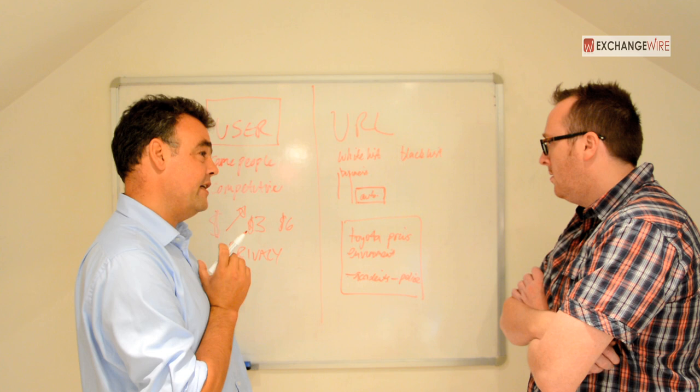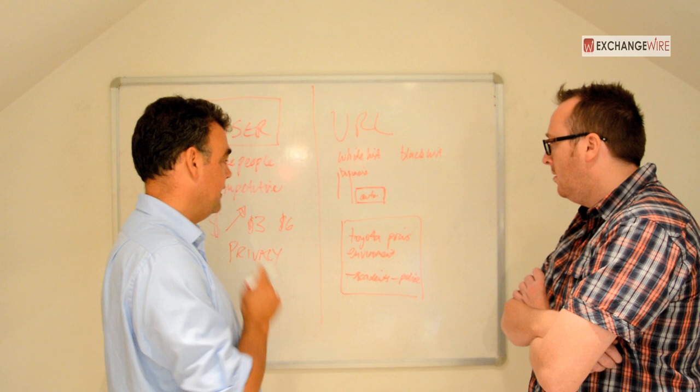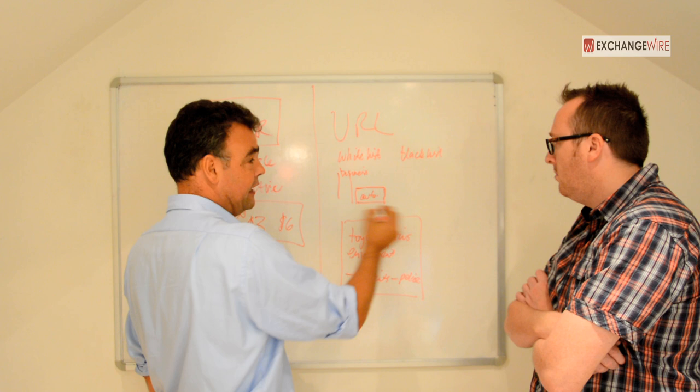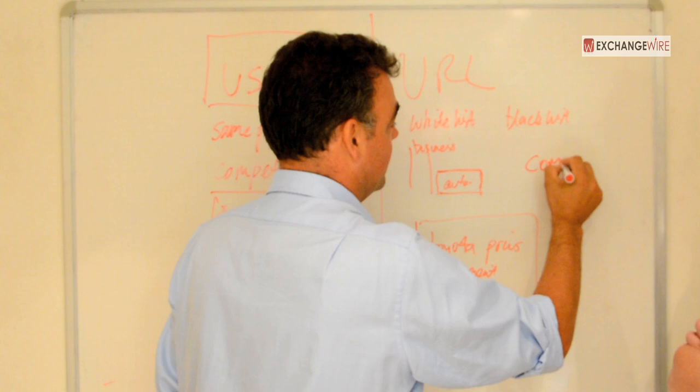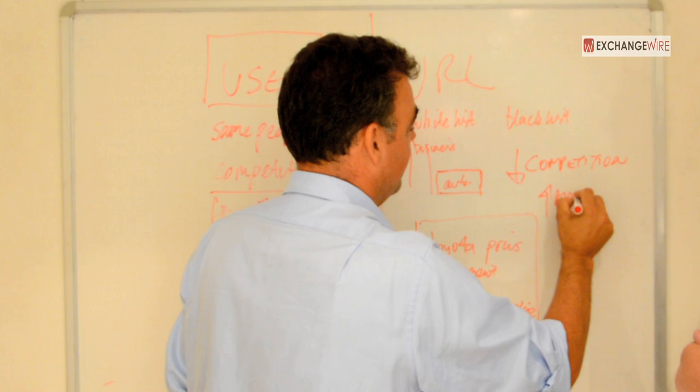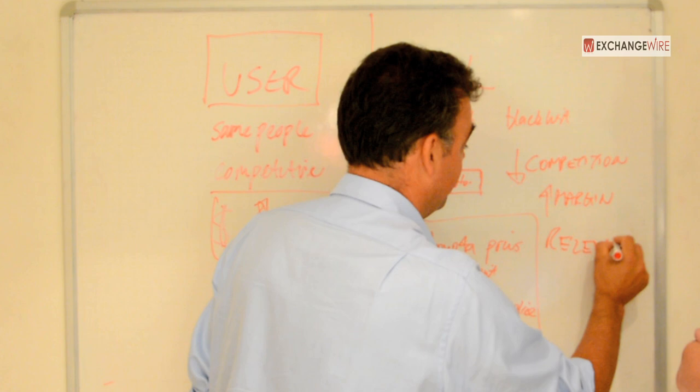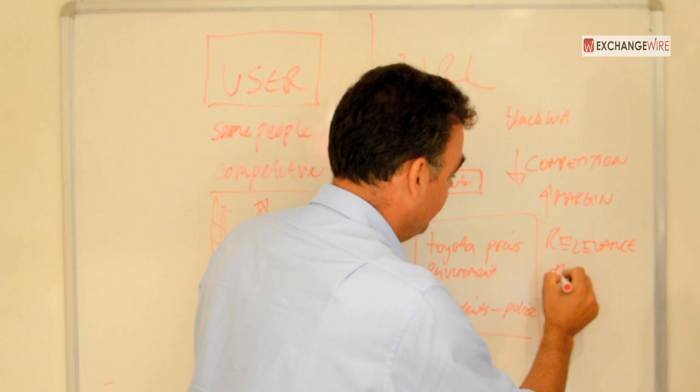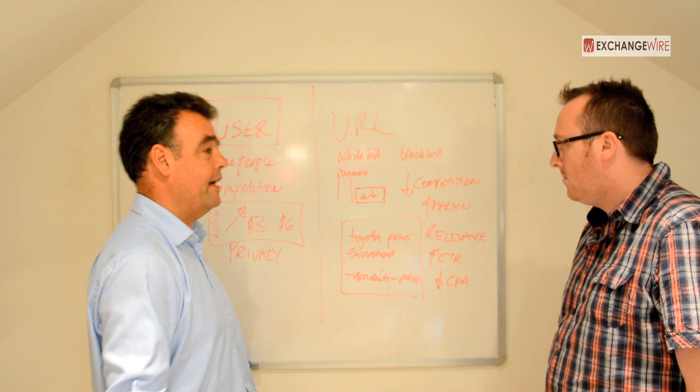If I want to reduce my wastage out of the billion bids per hour, I want to find just the right context for my brand. The key point is the price points of users are very high, but here in the URL space you can find really relevant context at very small prices — essentially you've got less competition. So competition is down, margin is up, and the most important thing is relevance. Where you have relevance — you're reading a page about Toyota and the Prius or energy efficiency and you put that Toyota brand up on the page — you actually improve the click-through rate and you reduce the CPA.